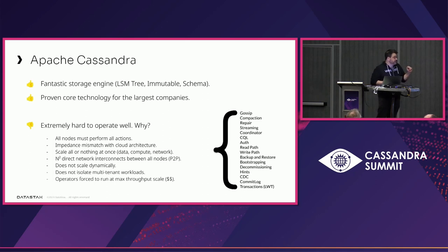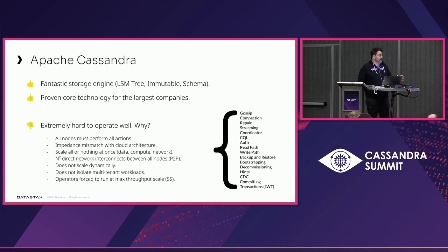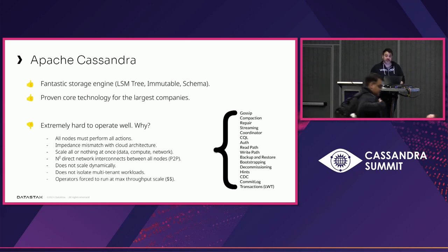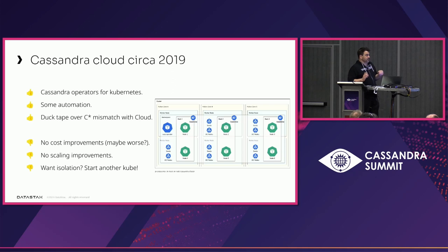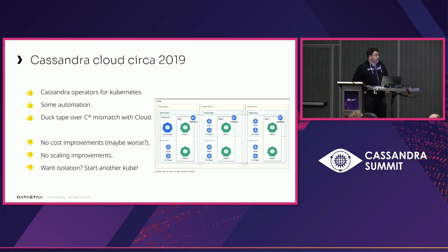You end up in this weird world where the fact that you can't break things up makes it hard. A lot of Cassandra clusters out there are running at max scale because they can't handle scaling up and then scaling back down. So elasticity is a problem — you have to run at kind of your peak, because if you run anything less than your peak you can't respond to a peak. This is the world we started in: Cassandra as a service circa 2019 — let's just run Cassandra clusters on Kubernetes. We tried to build Kubernetes operators, which automates some of the operational burden and deals with the impedance mismatch between Kubernetes and Cassandra.